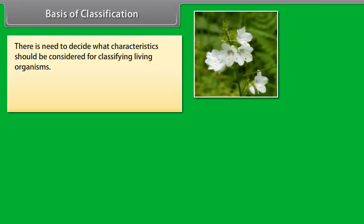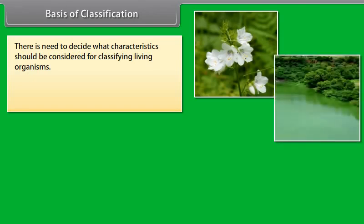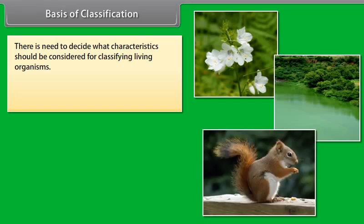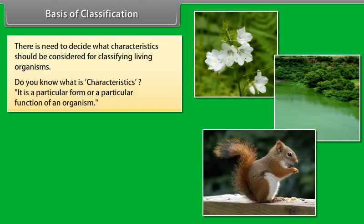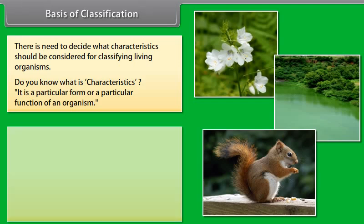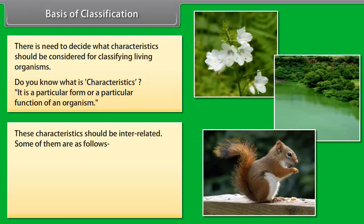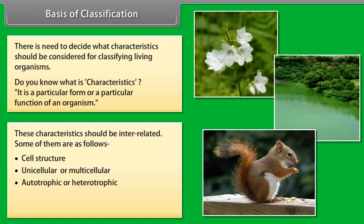So there is a need to decide what characteristics should be considered for classifying living organisms. A characteristic is a particular form or a particular function of an organism. These characteristics should be interrelated. Some of them are: cell structure, unicellular or multicellular, autotrophic or heterotrophic, level of organization and body design, and classification and evolution.